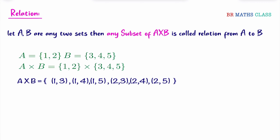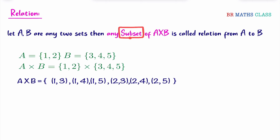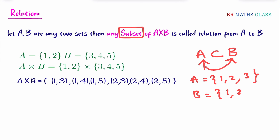Now, what is the definition of relation? A and B are any two sets. Any subset of A cross B is called a relation from A to B. You need to know what a subset is. When we say set A is a subset of set B, it means all the elements present in set A are also present in set B. For example, if A = {1, 2, 3} and B = {1, 2, 3, 4}, then A is a subset of B because all elements of A are in B. But B is not a subset of A because B has the element 4 which is not in A.